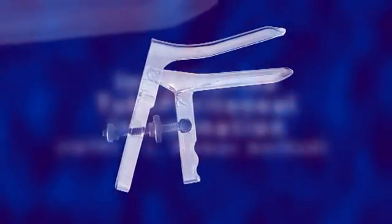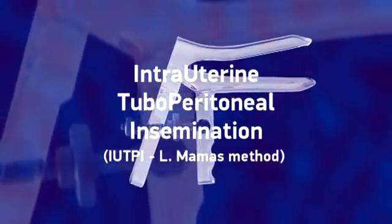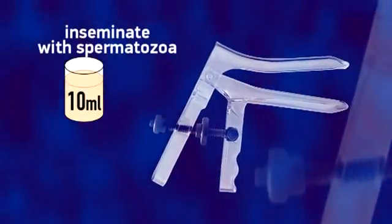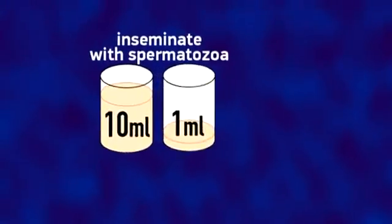Intrauterine Tuboperitoneal Insemination, IUTPI L-Mammas method, is a new method of insemination with 10 ml of inseminate, compared to standard IUI with 0.5 to 1 ml.